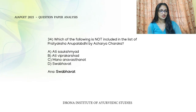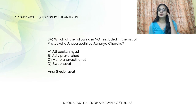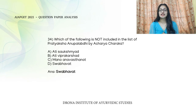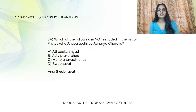The next question: which is not included in Pratyaksha Anupalabdi Bhavas by Acharya Charaka? From Charaka Samhita Sutrastanam 11th chapter, Tisreshaniyam Adhyayam, the list includes Ati Sannikarsha, Ati Viprakarsha, Aavaranam, Karana Dhurbalyam, Manu Anavastanam, Samana Abiharath, Abhibhavath, and Adi Saukshmiyakcha. Svabhava is not included — so it is the answer.